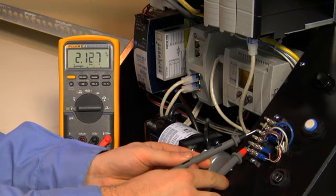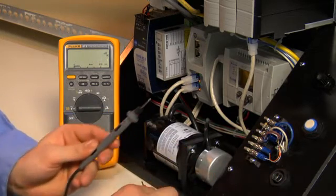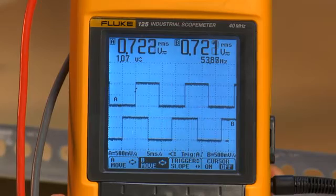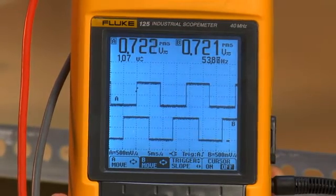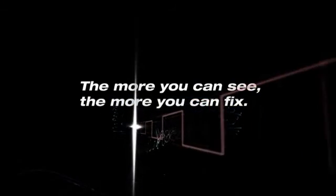While a DMM can give you precise amplitude and frequency values, only an oscilloscope can show you graphically the dynamic behavior of electrical signals. The more you can see, the more you can fix.